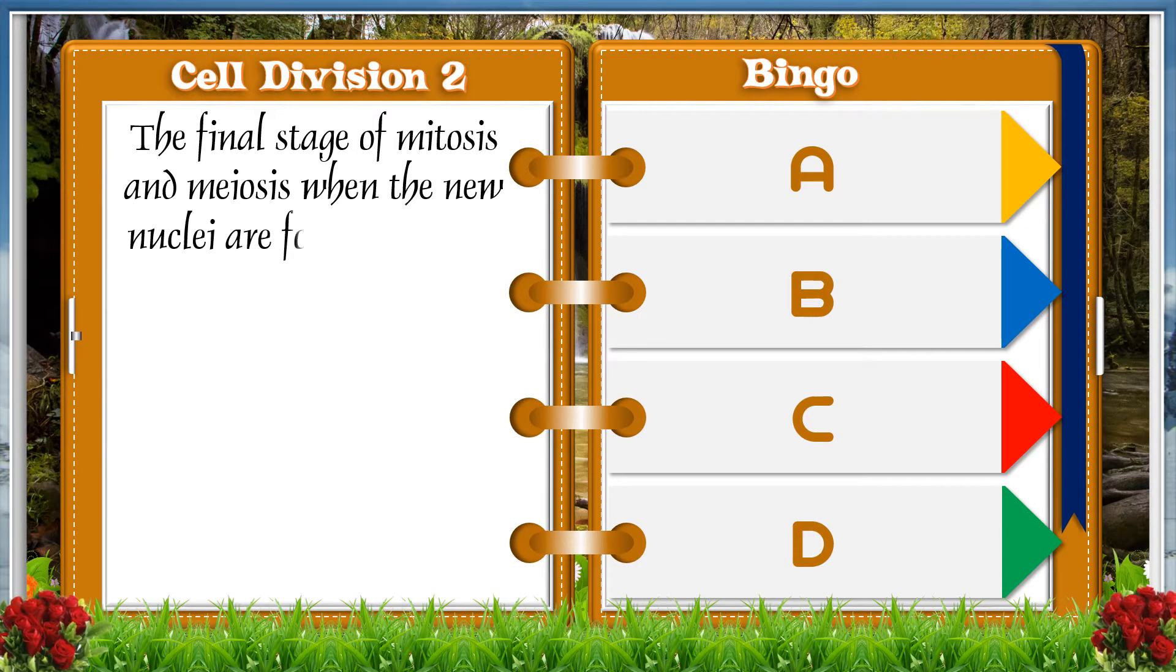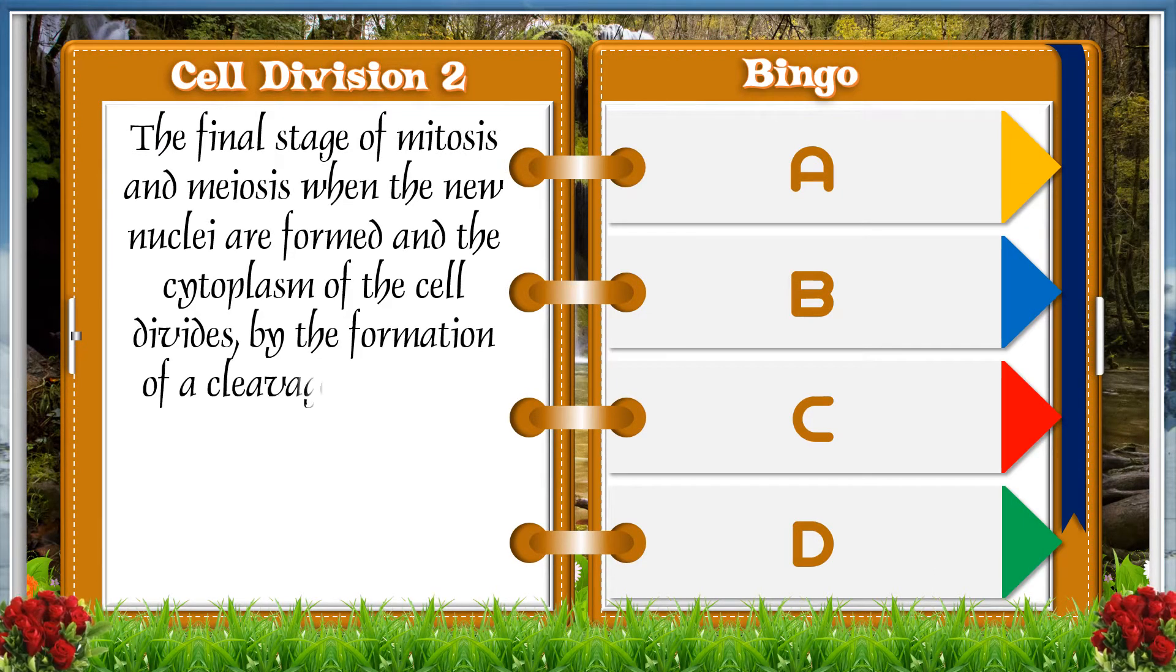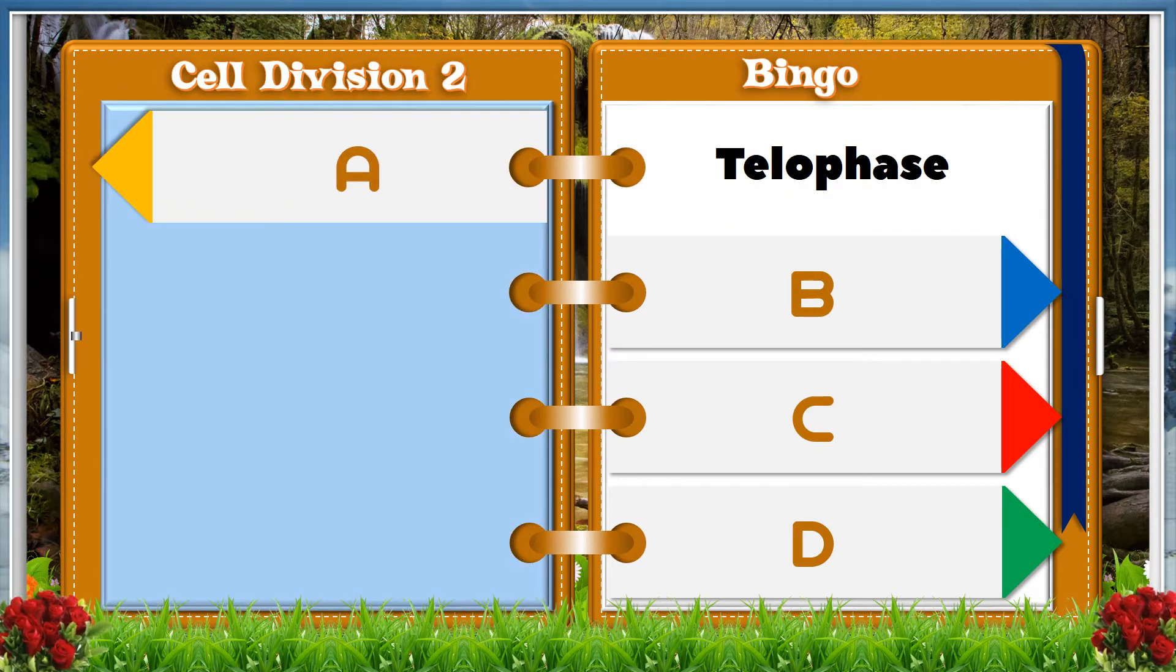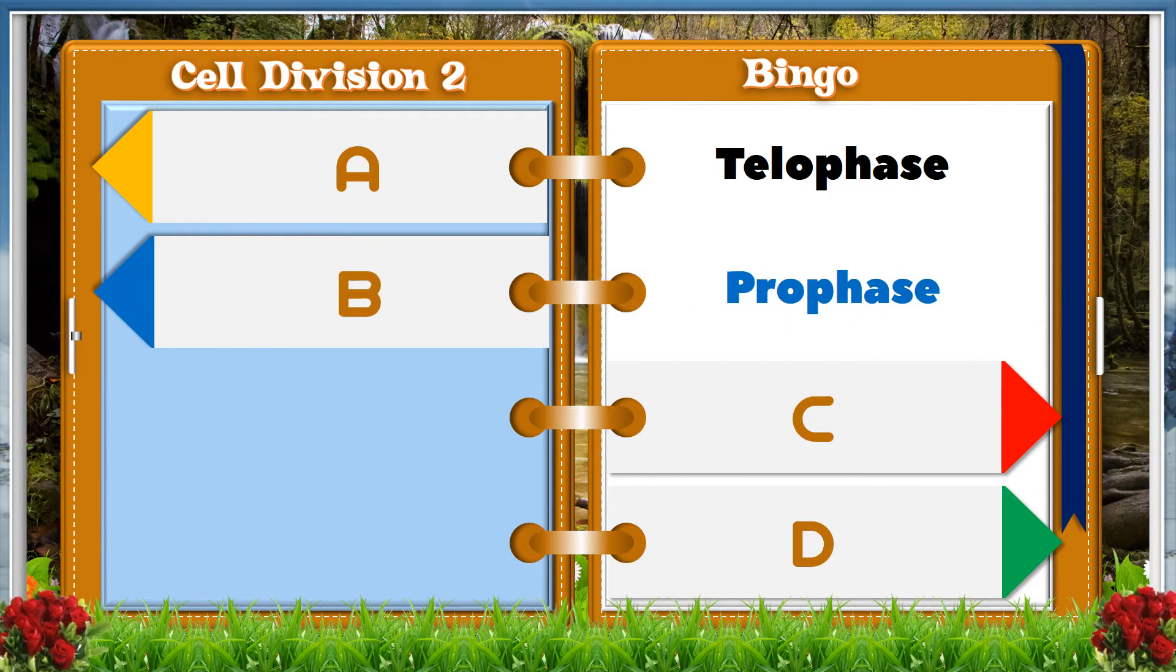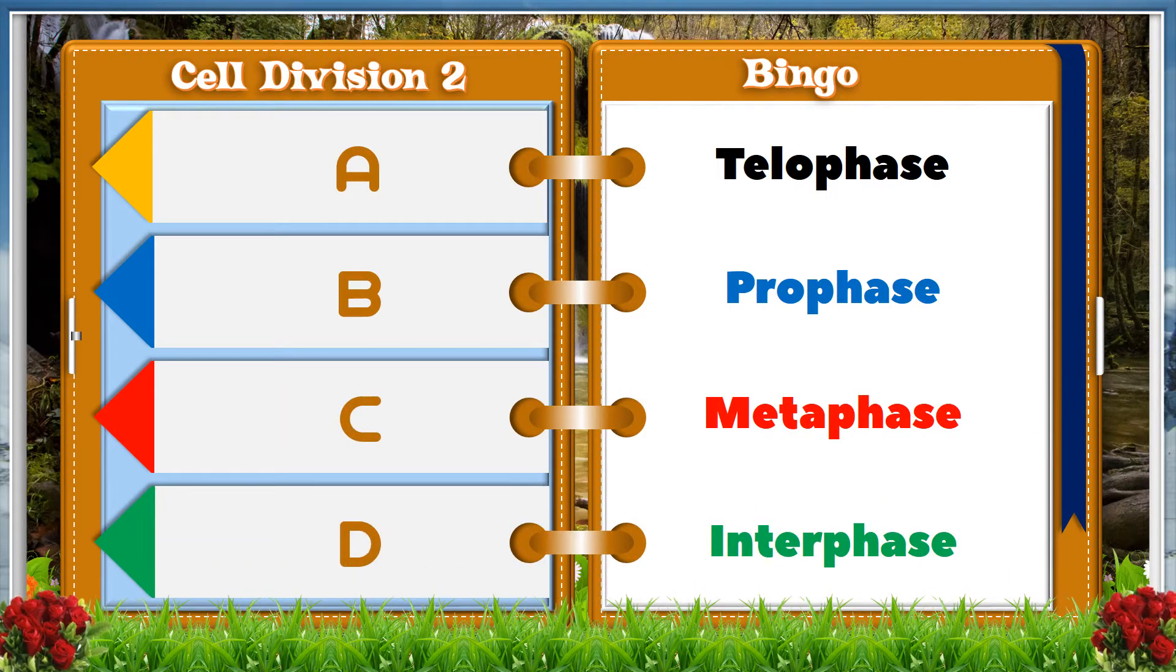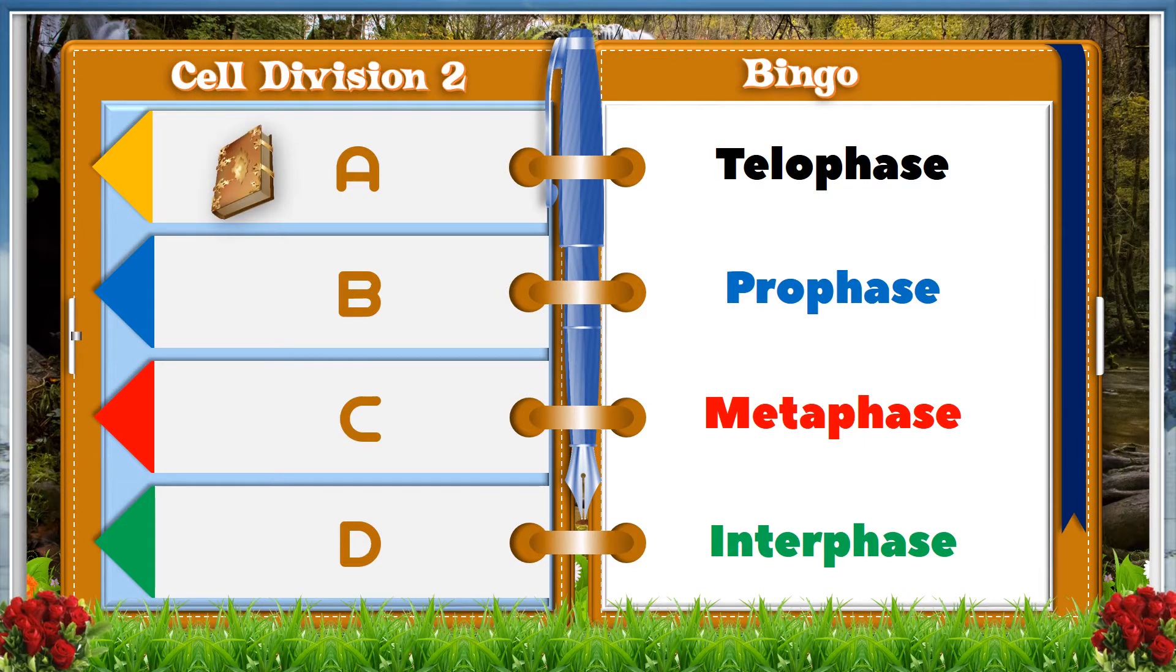The final stage of mitosis and meiosis when the new nuclei are formed and the cytoplasm of the cell divides by the formation of a cleavage furrow in animal cells and the formation of a cell plate in plant cells. This is followed by interphase. A: telophase, B: prophase, C: metaphase, D: interphase. And the answer is A, telophase.